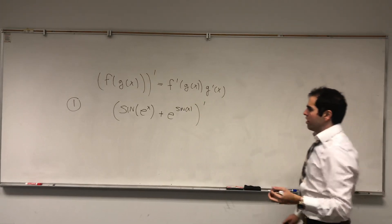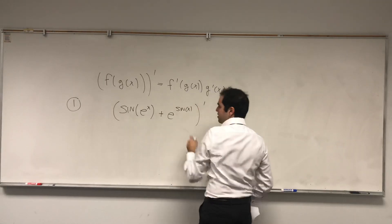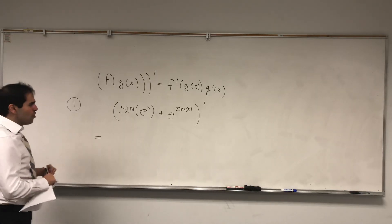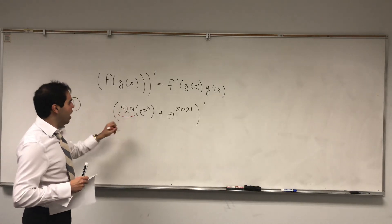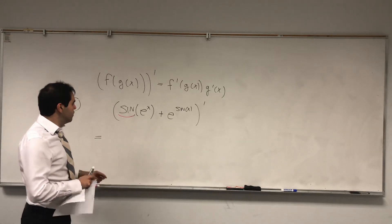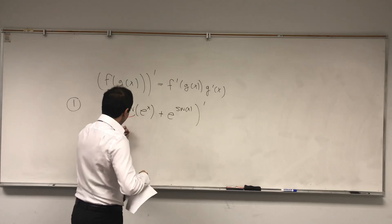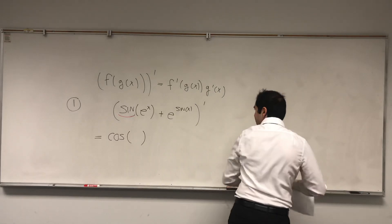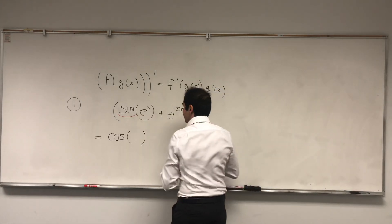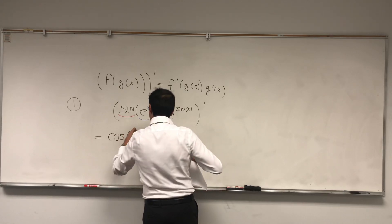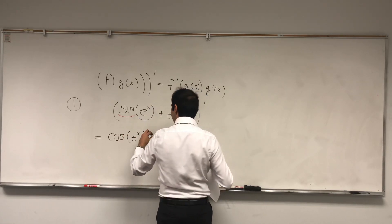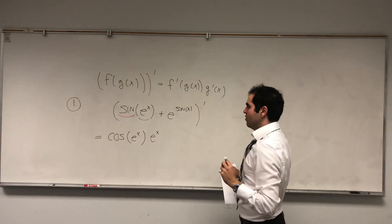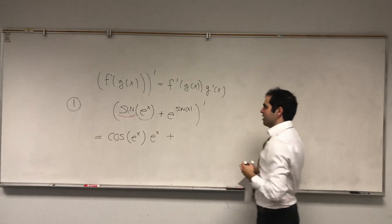Notice all that it is, it's the derivative of this plus the derivative of that. And remember to use the chain rule, you first differentiate the outside function. So here the derivative of sine is cosine — but not cosine of x, cosine of the inside function, which is e to the x — times the derivative of the inside function, which is the derivative of e to the x, which is e to the x.